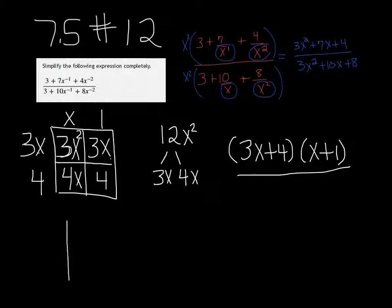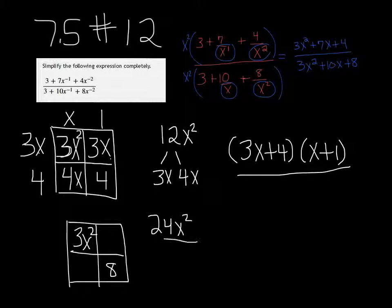All right, and then the other one, we'll put that in a box too. So the a is 3x squared, the c is 8, and then we get 24x squared if you multiply across. And the factors of that, they're going to add up to 10, would be 6x and 4x.